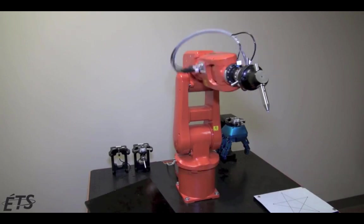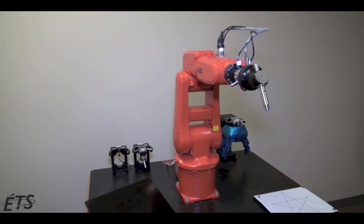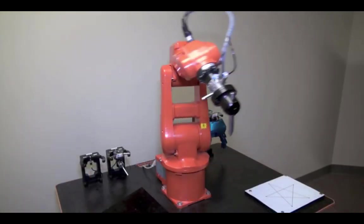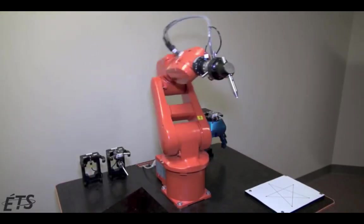The second example is what's called a wrist singularity. It shows the robot trying and failing to follow a straight line at a constant velocity.